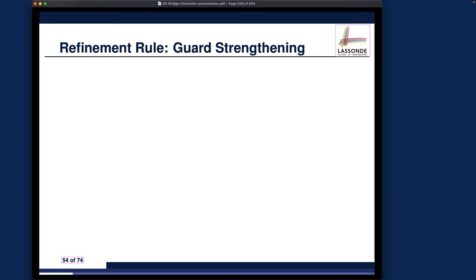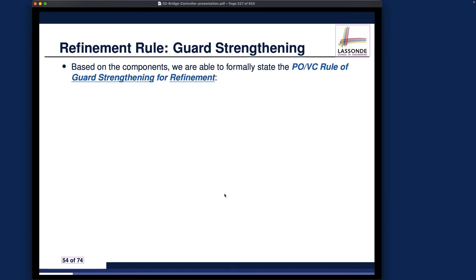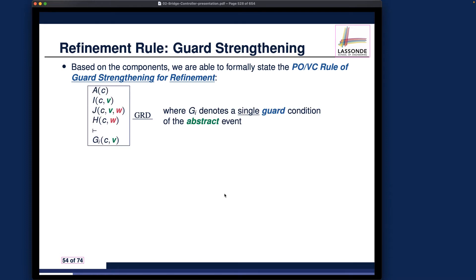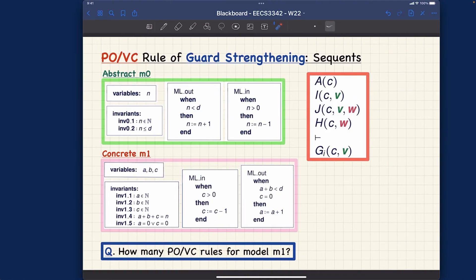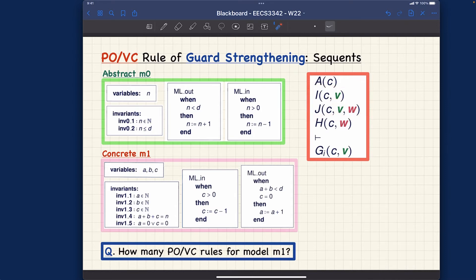Let's now formulate the first part of the refinement proof obligation, which is about guard strengthening. This will be the sequent. Let's talk about the components very quickly just to remind you, and then we'll see how we can apply this to our concrete model. The axiom is here, and the distinction between i and j is that one uses abstract variables only, while the other uses both abstract and concrete variables — so one is the abstract invariant and the other is the concrete invariant.